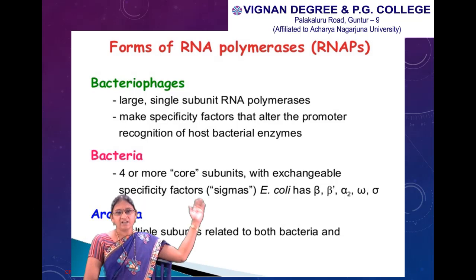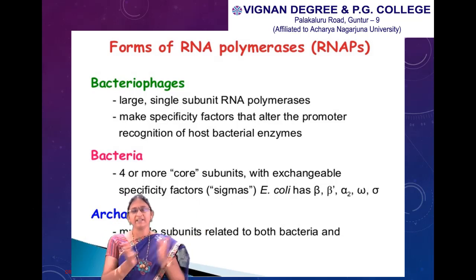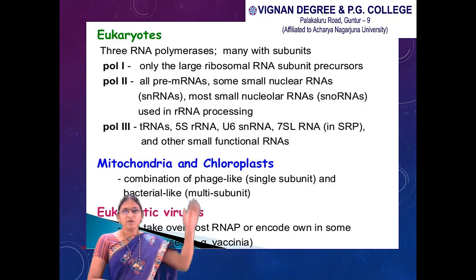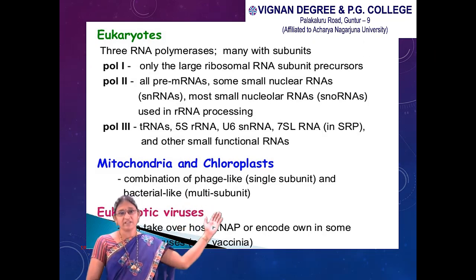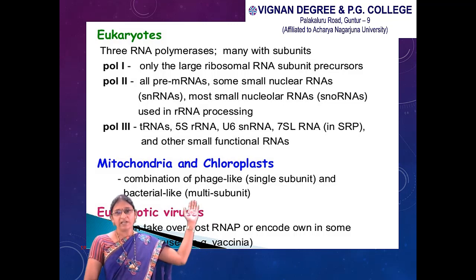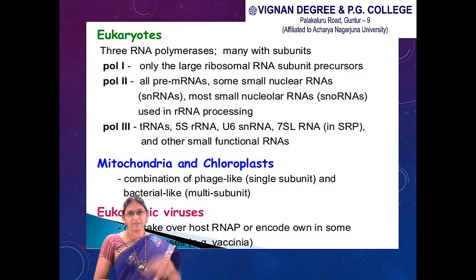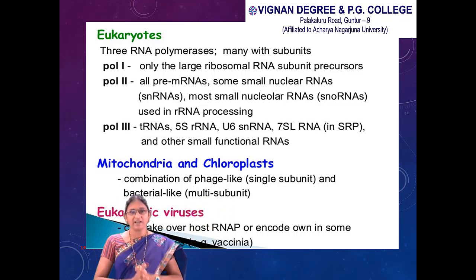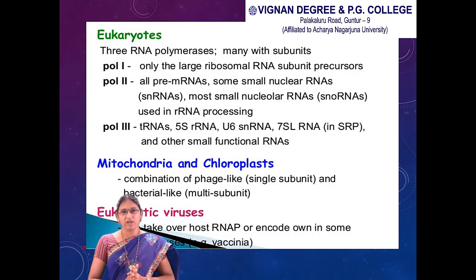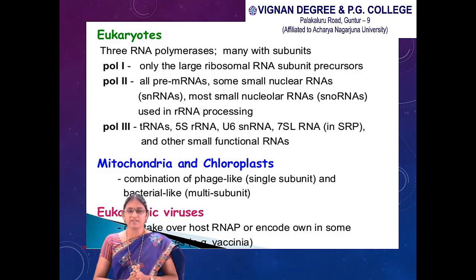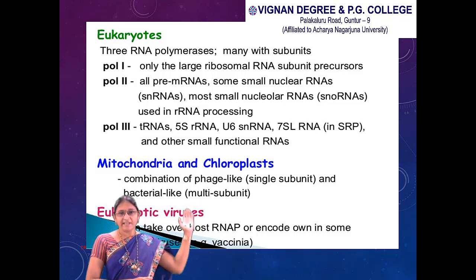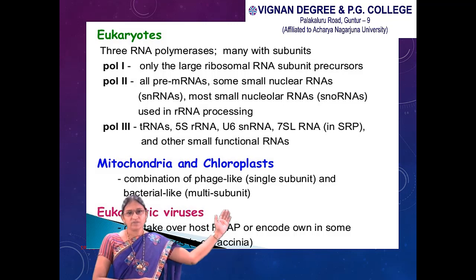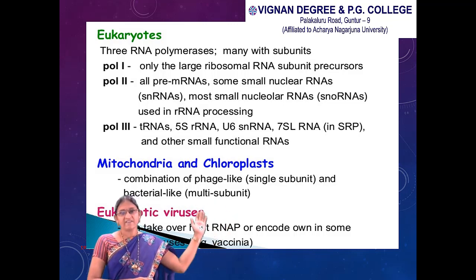Archaeal bacteria have multiple subunits related to both bacteria and eukaryotes. Eukaryotic RNA polymerases have many subunits. Polymerase I synthesizes only the large ribosomal RNA subunit precursors. Polymerase II synthesizes all mRNAs, some small nuclear RNAs, and most small nucleolar RNAs used in rRNA processing. Polymerase III is involved in RNA synthesis and produces tRNAs, 5S rRNAs, U6 snRNAs, 7S RNA, splicing RNAs, and other small functional RNAs.